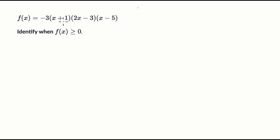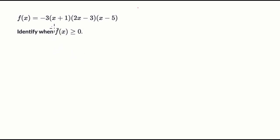We're told that f of x is equal to all of this. Identify when f of x is greater than or equal to zero. Pause this video and have a go at that before we do this together. What we're going to do is think about at what x values does f equal zero, and then we can test the intervals in between, because when it equals zero it might just touch the x-axis or it might cross the x-axis, and then we can think about the intervals where it's actually greater than or equal to zero.